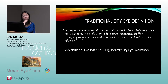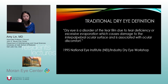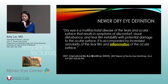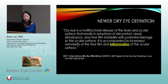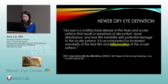Next is dry eye. The traditional definition was that dry eye is a disorder of the tear film due to tear deficiency or excessive evaporation causing damage to the interpalpebral ocular surface with ocular discomfort. A newer definition says dry eye is a multifactorial disease of the tears and ocular surface resulting in symptoms of discomfort, visual disturbance, and tear film instability, accompanied by increased osmolarity and inflammation of the ocular surface — inflammation being very important. There is also a newer definition coming out from the International Dry Eye Workshop.